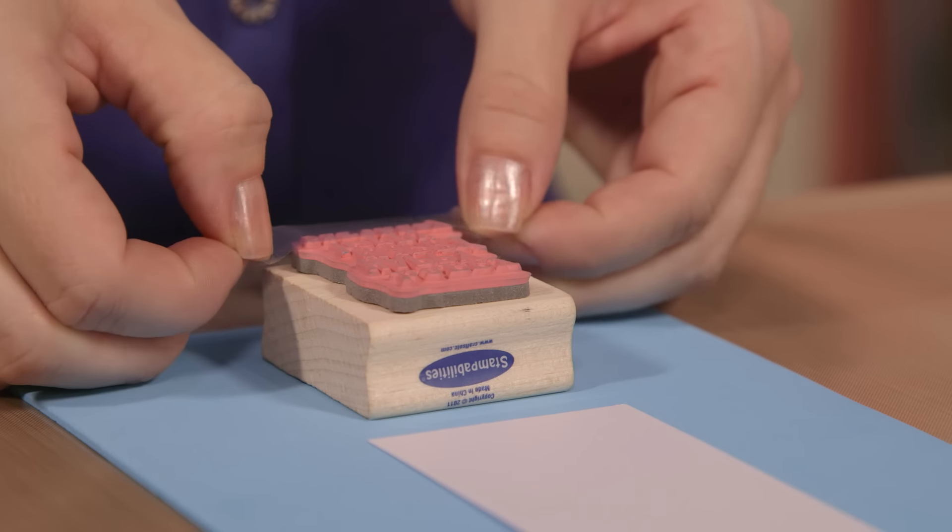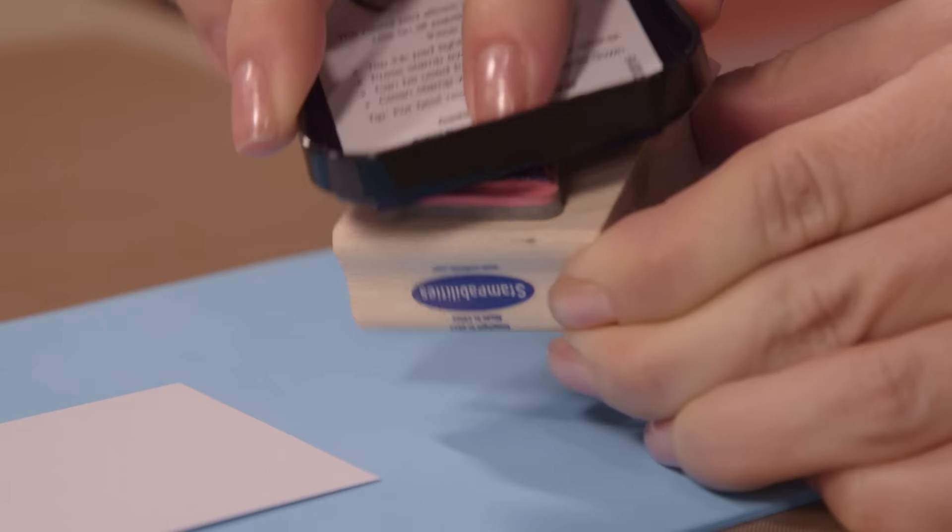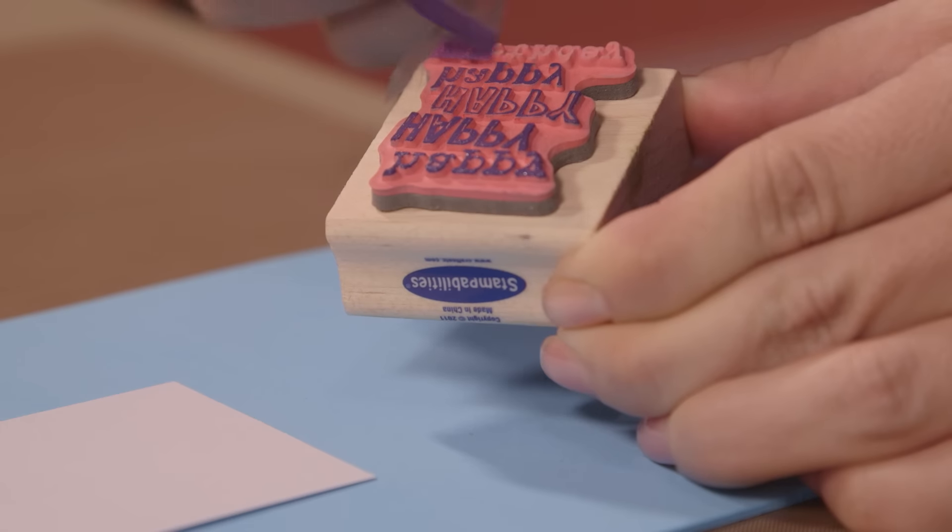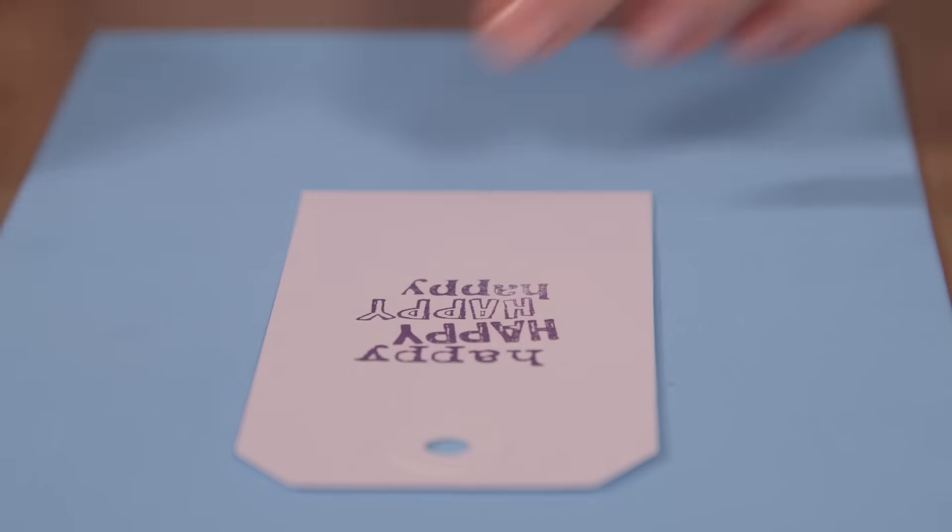You could also try placing some tape directly onto the part of the stamp you don't want to appear. Then, just ink your stamp, remove the tape, and press it onto the paper. I love how it changed this birthday stamp into a stamp I can use for just about any occasion.